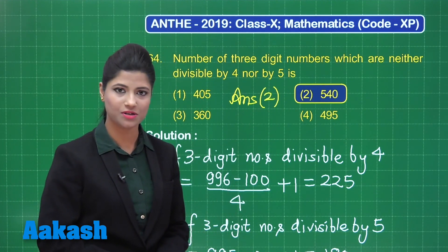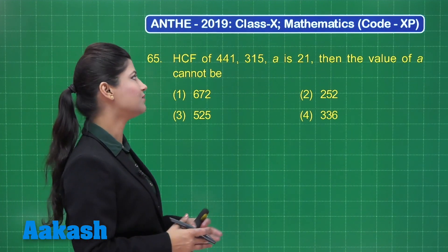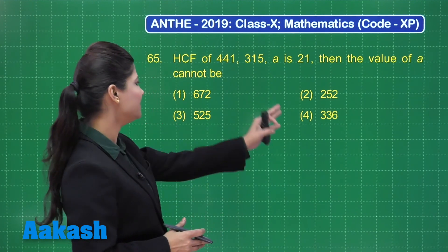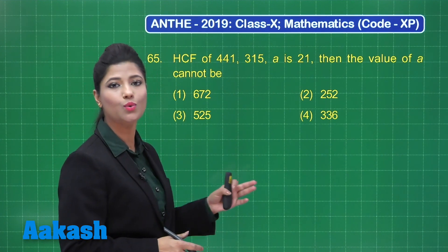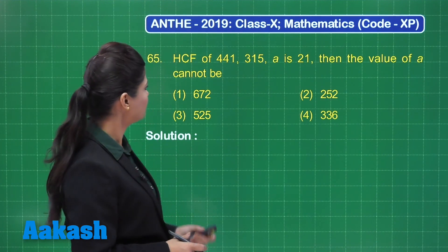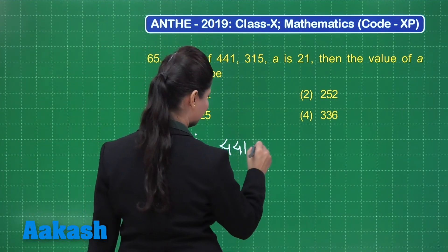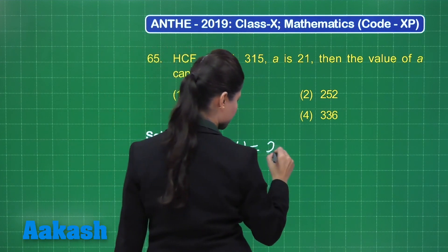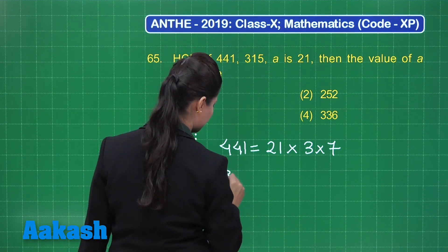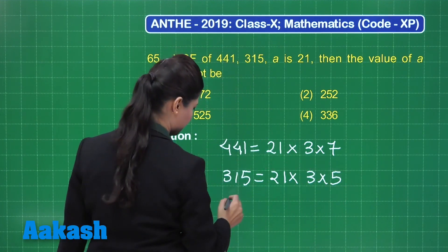Let us take up question number 65, which states: HCF of 441, 315, and 'a' is 21. The value of 'a' cannot be — with options 672, 252, 525, and 336. Looking at the given numbers: 441 can be factorized as 21 × 3 × 7.